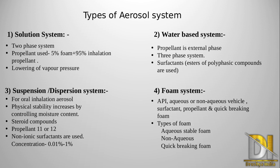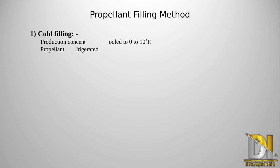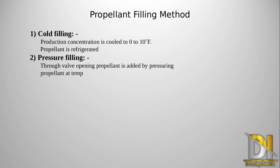We will now look at different methods of propellant filling. The first is cold filling and the second is pressure filling. In cold filling, the product concentrate is cooled to 0 to -10 degrees Fahrenheit and added to the container. The propellant is refrigerated at -20 to -40 degrees Fahrenheit, and neon cylinders are used for this purpose. In pressure filling, propellant is added through the valve opening using pressurized gas at a suitable temperature.